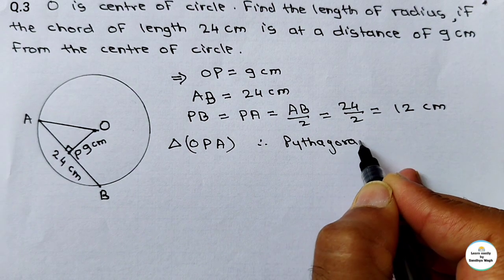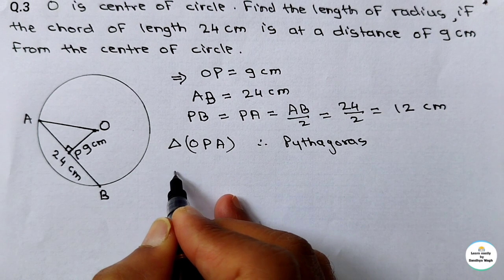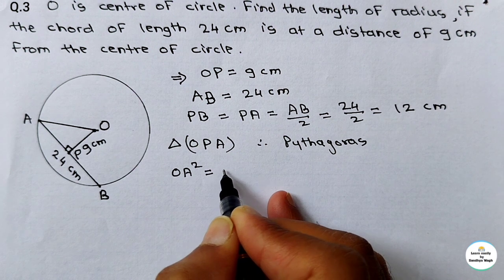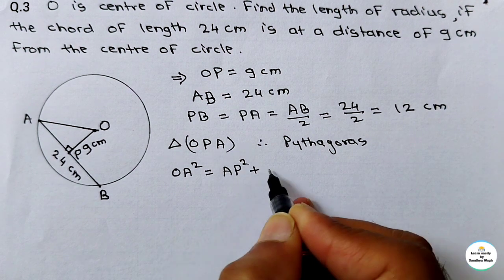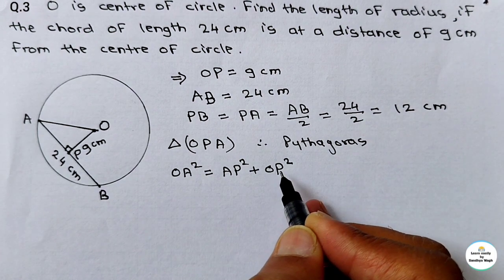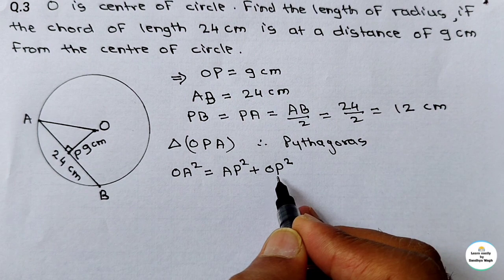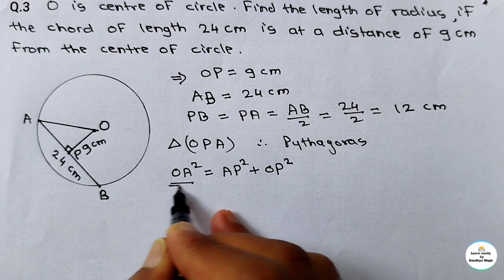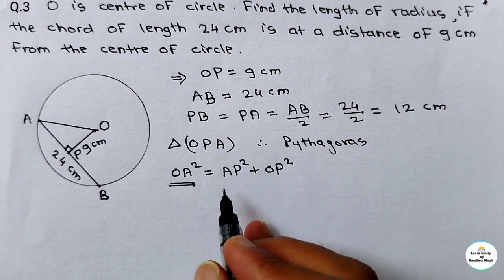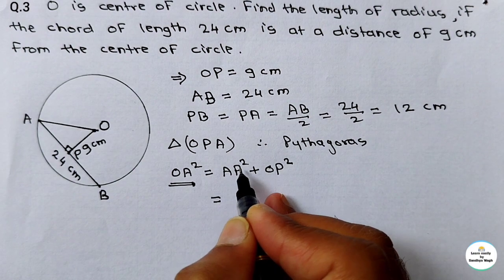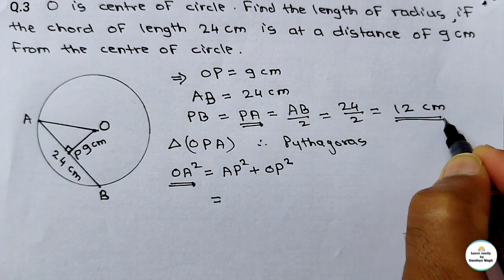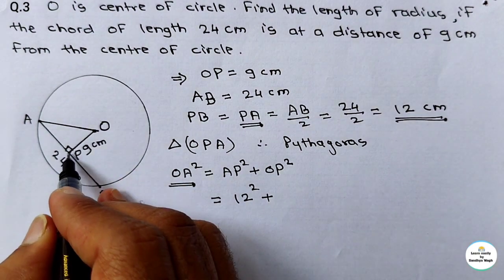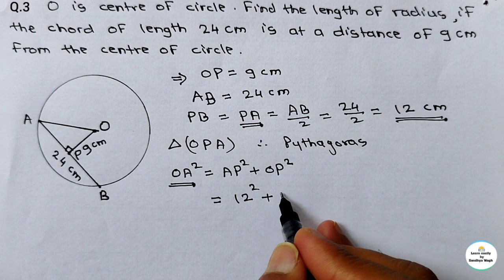Pythagoras theorem says: OA² = AP² + OP². This is the Pythagoras theorem, and with the help of this we can find the radius of the circle. Radius is nothing but OA. So put in the values: AP is 12 cm, so 12²; plus OP, the minimum distance of chord from center, is given as 9 cm, so 9².